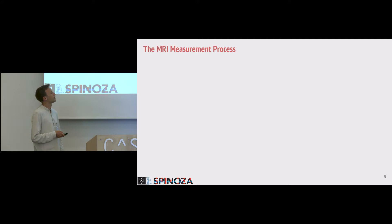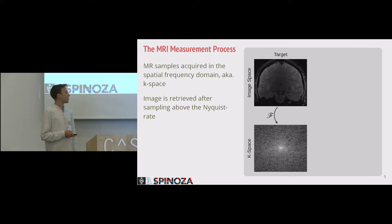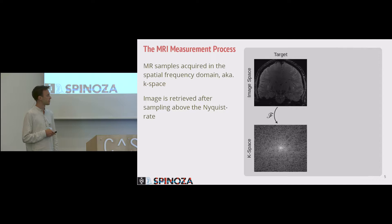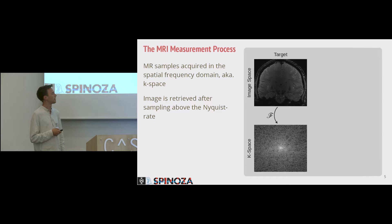I'm sure many of you already know about it, but for those who don't: MRI images are acquired not in image space, but in the spatial frequency space, known as K-space. And once you have collected enough samples to abide by the Nyquist criterion, you can use the inverse Fourier transform to get your MR image. However, collecting these samples is a lengthy procedure, as each sample is collected sequentially, and there are physiological as well as hardware limitations that make the process slow.